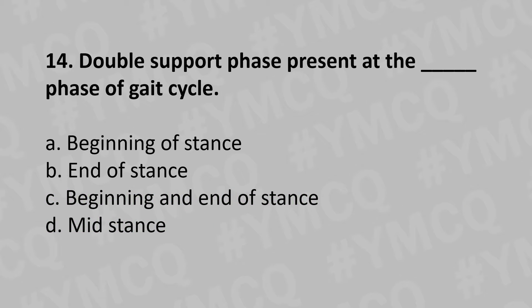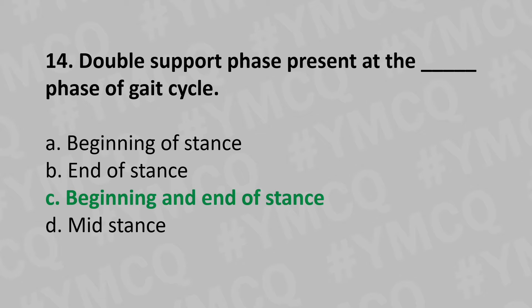Moving to our 14th question: the double support phase is present at which phase of the gait cycle? Option A: Beginning of the stance phase, Option B: End of the stance phase, Option C: Beginning and end of the stance phase, Option D: Mid-stance. And the answer is Option C: Beginning and end of the stance phase.